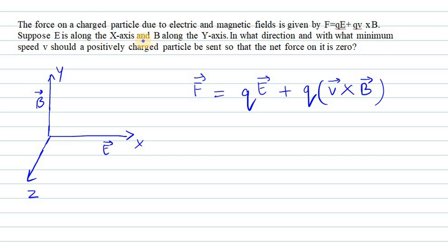Suppose E is along the x-axis, so E = E î. The direction of B is along the y-axis, so B = B ĵ. In what direction and with what minimum speed v should a positively charged particle be sent so that the net force on it is zero?